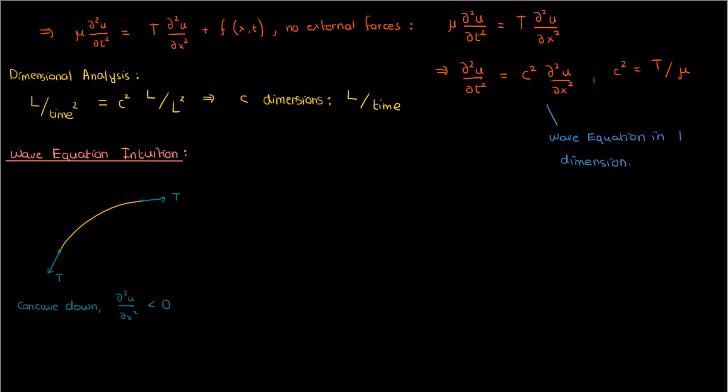Let's go back and look at the tension on this concave down piece of string. On the right end, the vertical component of the tension is small, because the string is slightly more flat at the right end. But on the left end, the vertical component of the tension is larger, because the string is more steep at the left end.